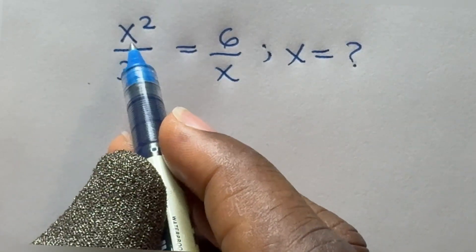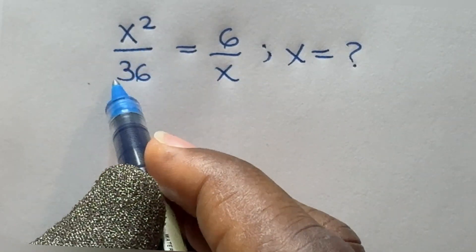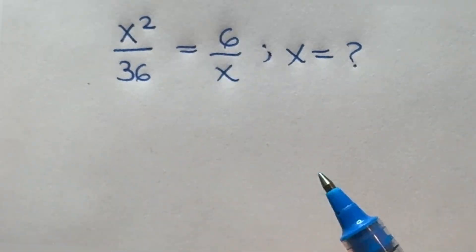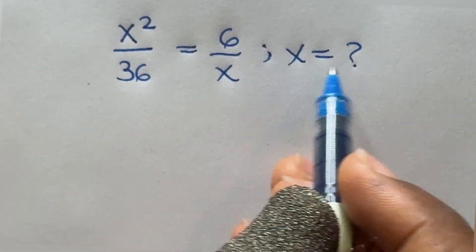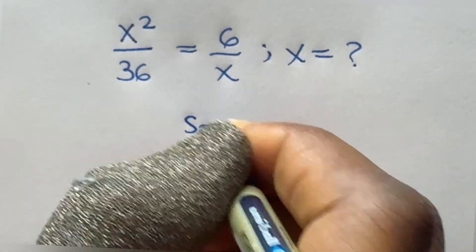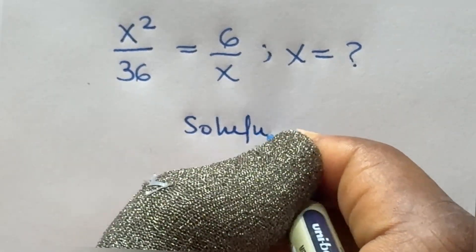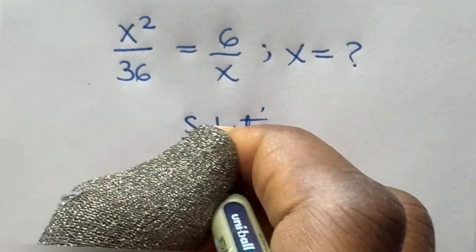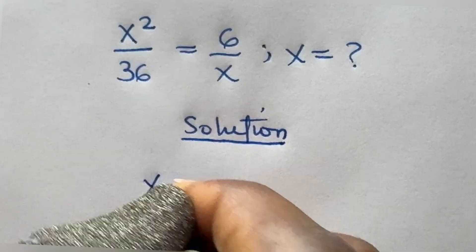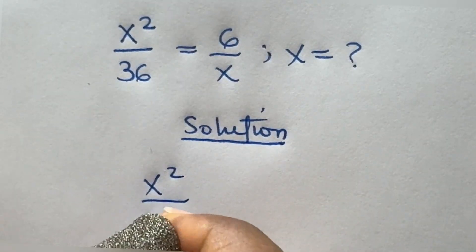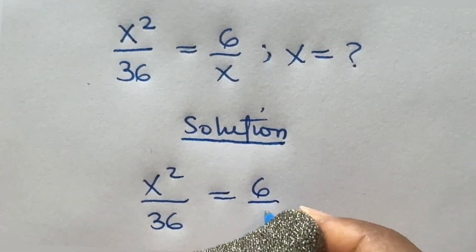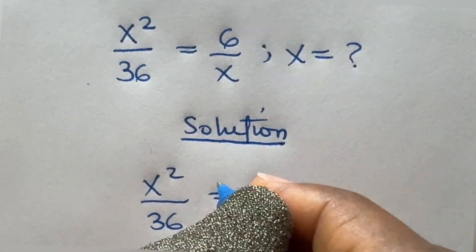Hello. x raised to power 2 divided by 36 is equal to 6 divided by x. Find all values of x. What I am going to do here: x squared divided by 36 is equal to 6 divided by x — I will cross multiply.